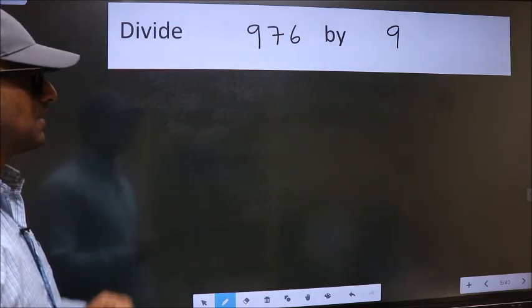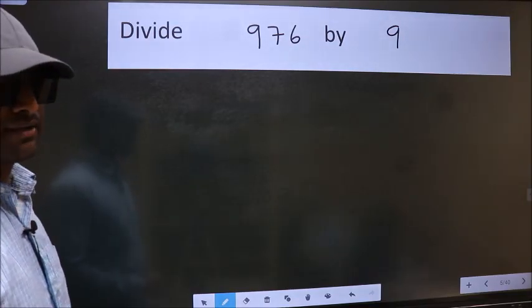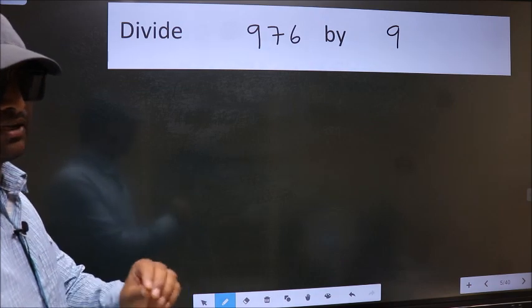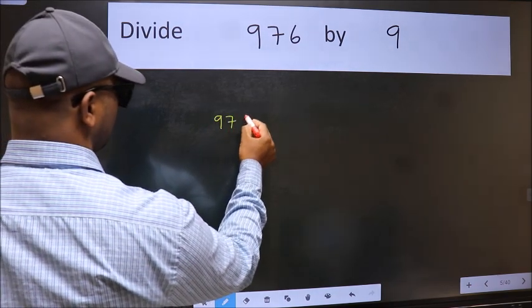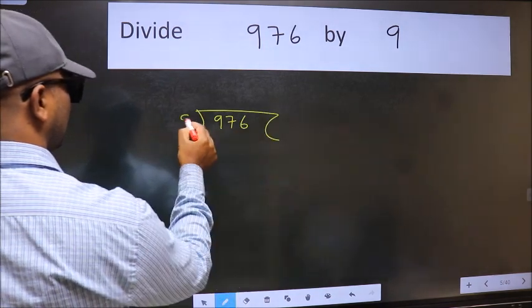Divide 976 by 9. To do this division, we should frame it in this way: 976 here and 9 here.